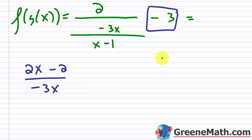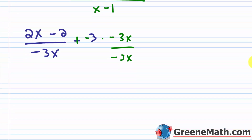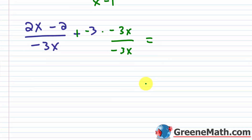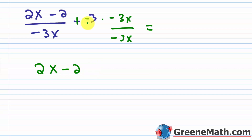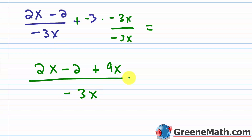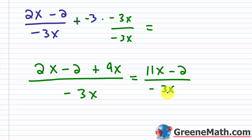Now I still have the minus 3 to deal with. I want a common denominator, so I'll multiply negative 3 by negative 3x over negative 3x — and to avoid a sign mistake, I'll write plus negative 3. So I have 2x minus 2, and then negative 3 times negative 3 times x gives plus 9x, all over the common denominator of negative 3x. So 2x plus 9x is 11x, and then minus 2, over negative 3x. Obviously this is not equal to x, so these two are not inverses. You don't have to check g of f of x — if one condition fails, they're not inverses.